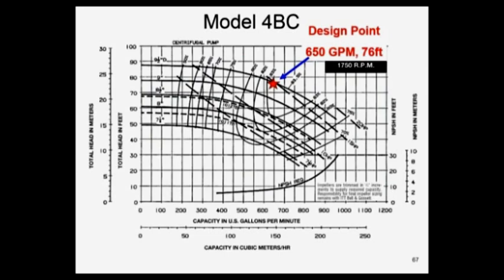We need a flow rate of 650 reading straight down to the bottom horizontal, you see the flow rate is GPM on the bottom. Vertically you'll see it in meters and in feet of head. In this case we're looking for 76 feet of head going off to the vertical axis.